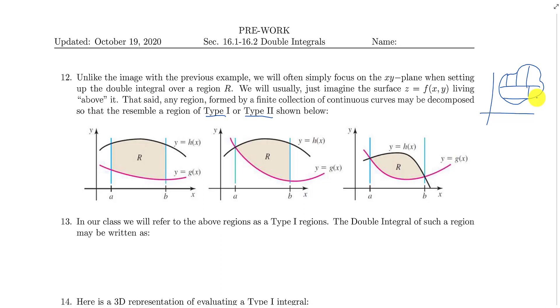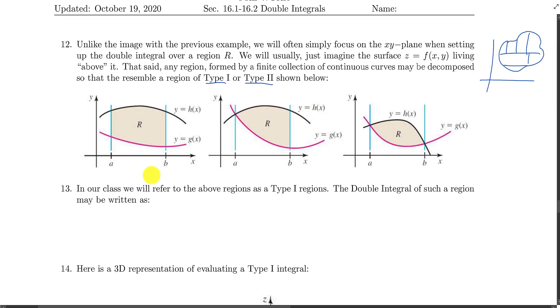So what we want to focus on is what are we going to do if we're dealing with a type 1 region? I'm going to describe these regions below. These are all type 1 regions. So what we see here is that the left and right limits of integration are all defined by some x-coordinate here, whereas the upper and lower portions of this region in each one of these three examples are defined by some curve.